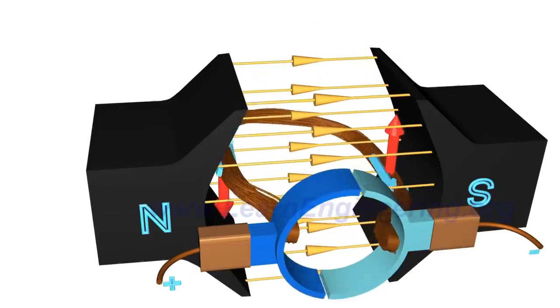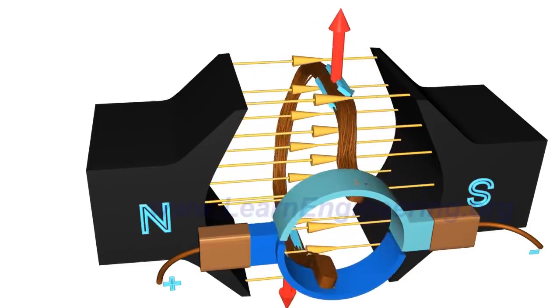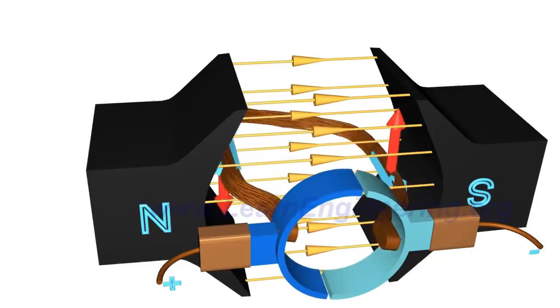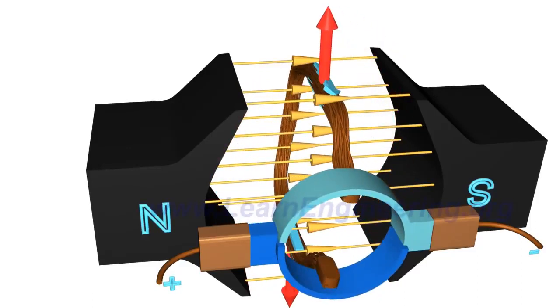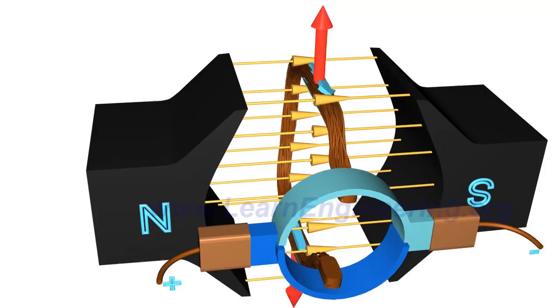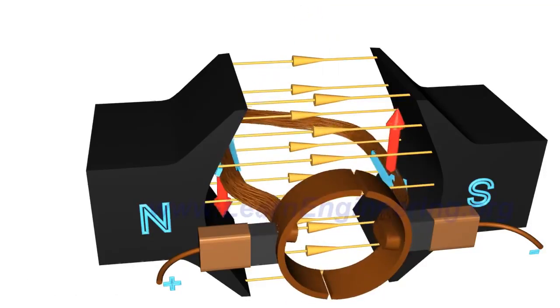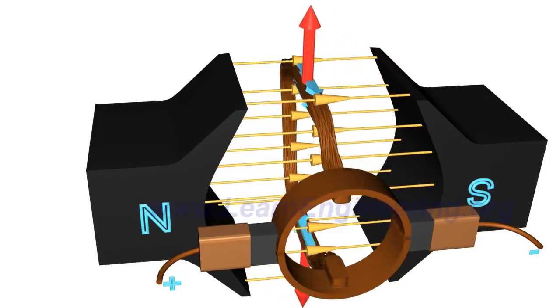But if you observe the torque action on the coil closely, you will notice that when the coil is nearly perpendicular to the magnetic flux, the torque action nears zero. As a result, there will be irregular motion of the rotor if you run such a DC motor.